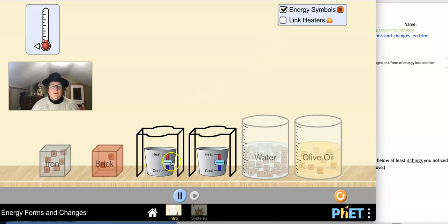The other thing you can do up here is link the heaters. If you want to add heat to a system, you can simply turn up the flame. If you want to cool a system, you can add ice here. If you want both of the heaters to do the same thing at the same time, you can link the heaters.